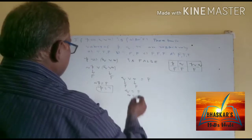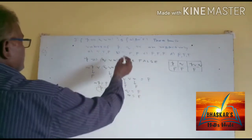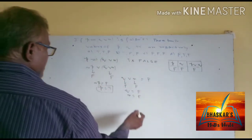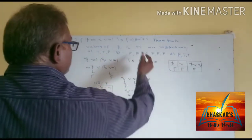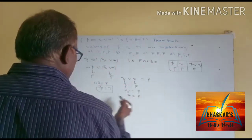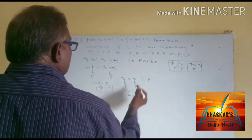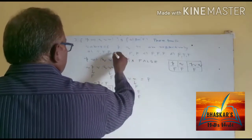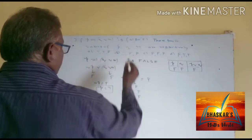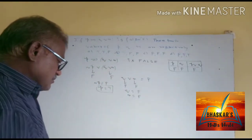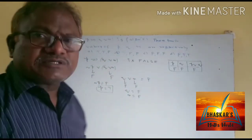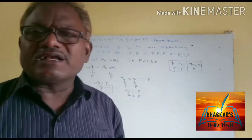Therefore, the truth values of P, Q, R are: T, F, F respectively. So the second option is the correct answer. The truth value of P, R is T, F.